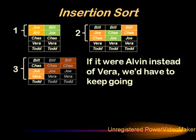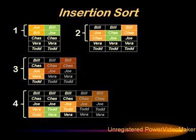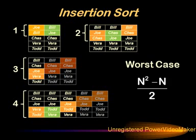The same kind of pattern is asserting itself here in the worst case: one test to get the first two in the correct relative order, two tests for the first three, three tests for the first four, and four tests for all five in the correct relative order. Although the insertion sort is smart enough to stop early, in general it does better than selection or bubble sort, but in the worst case it is still (n² − n) / 2.